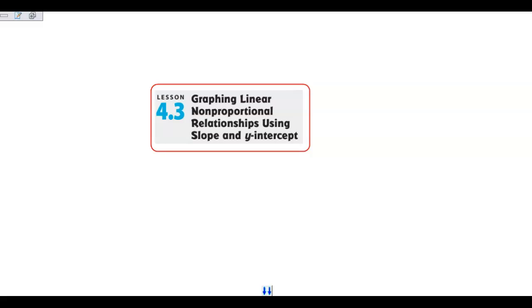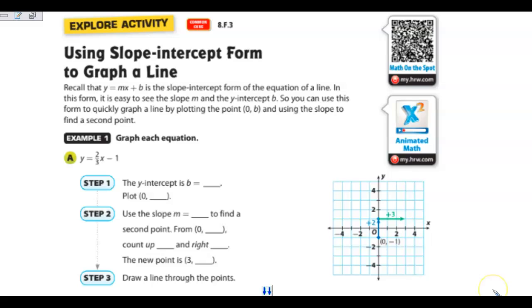Hello. Today we're going to be graphing linear non-proportional relationships using slope and the y-intercept. So we can use the slope-intercept form to graph a line. We know that the basic form of slope-intercept is y equals mx plus b. It is the slope-intercept form of the equation of a line.